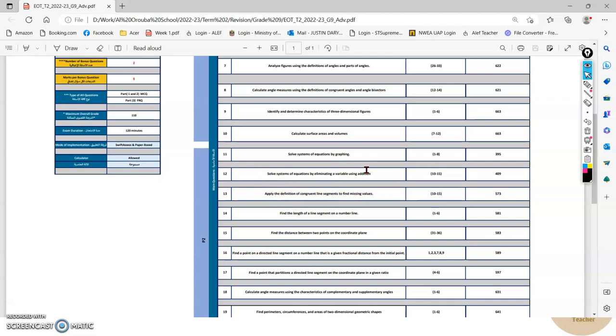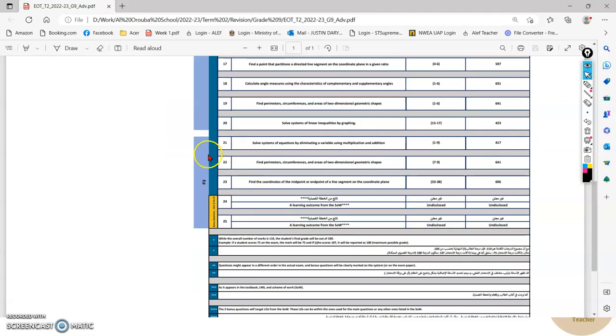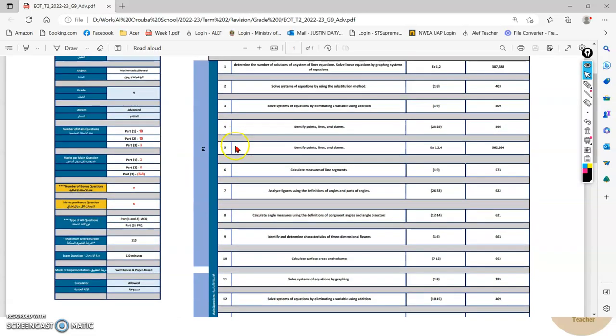All of these will be MCQs, so you can use any methods—shortcut methods, calculator methods, anything is fine—but you need to get the correct answer. Part 3 will be in writing; you need to write each and every step in detail, which will be shown in the revision videos. The last two bonus questions will be added in Part 3.